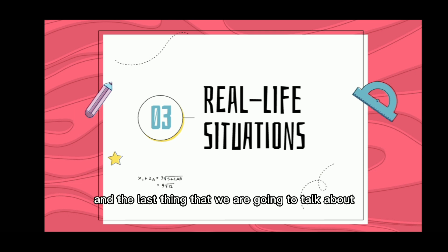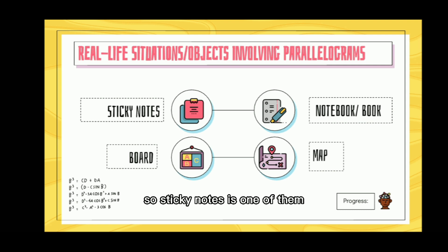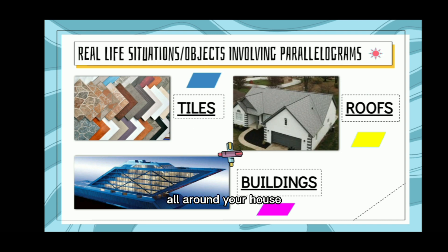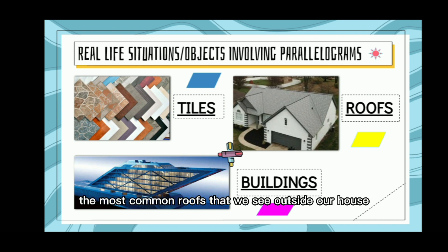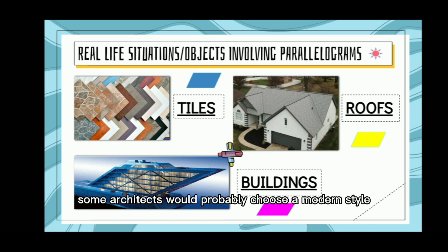The last thing we are going to talk about are real-life situations or objects that involve parallelograms. First is sticky notes, since a parallelogram has four sides, four vertices, and four angles. Second is a notebook or book, a board, and a map. There are also tiles, which you can see in your bathroom and kitchen. Next are roofs, the most common roofs we see outside our house. And lastly, buildings — in modern times, some architects choose a modern style of buildings where you can see parallelograms.